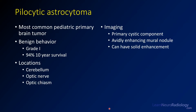This is a case of pilocytic astrocytoma — the most common pediatric primary brain tumor. It's a relatively benign lesion with 94% 10-year survival. These are grade 1 lesions. The most common location, particularly in children, is in the cerebellum and posterior fossa.